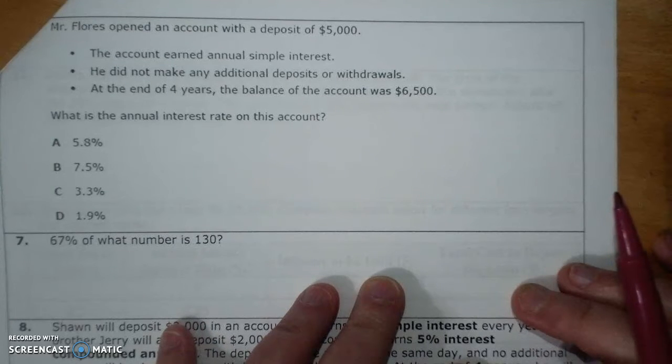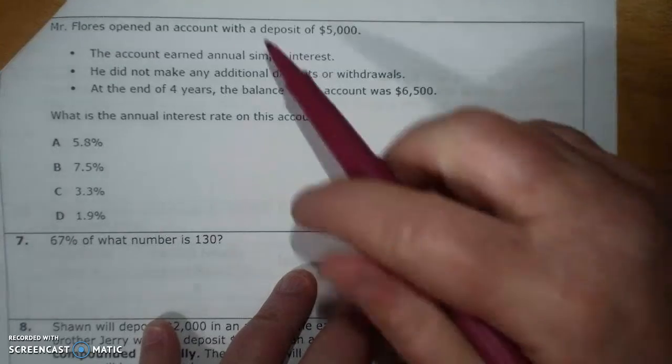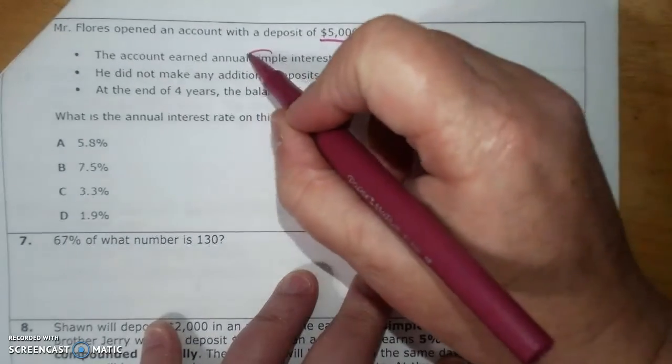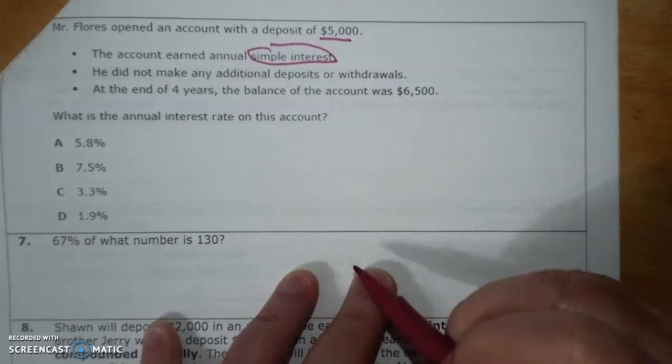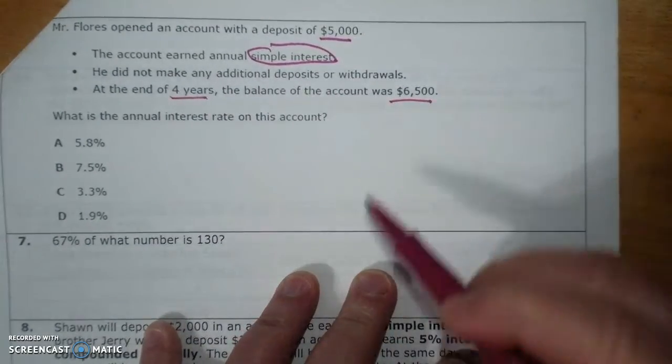And here we go again. This is part two of your financial literacy review. Mr. Flores opened an account, deposited that amount of money, earned simple interest, did not make any additional deposits. Four years, he had that.